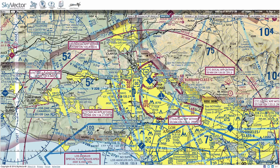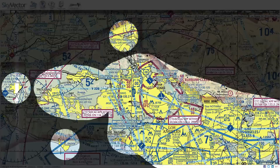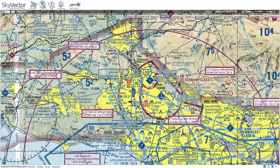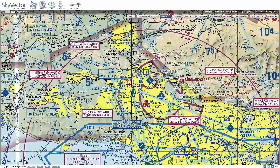First, we're going to take a look at the sectional chart over near Los Angeles. The first thing we're going to see is this bright yellow. On sectional charts this represents populated areas. You'll see this on all these sectional charts — if there's not this bright yellow, you're not going to have a very populated area.